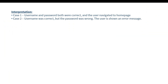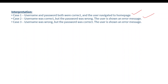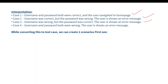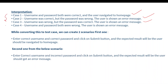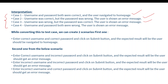From the decision table we interpret: test case 1 — correct username and password, user navigates to home page; test case 2 — correct username but wrong password, error message shown; test case 3 — wrong username but correct password, error message shown; test case 4 — both incorrect, error message shown. There are essentially two scenarios: one positive (both correct) and three negative. This is how we derive four test cases using decision table testing.